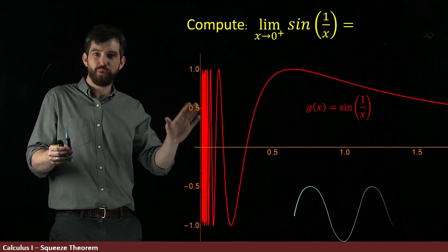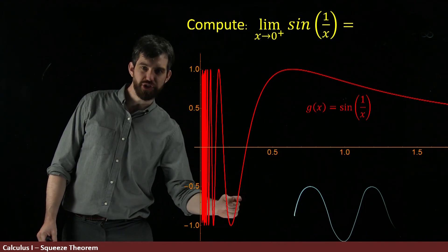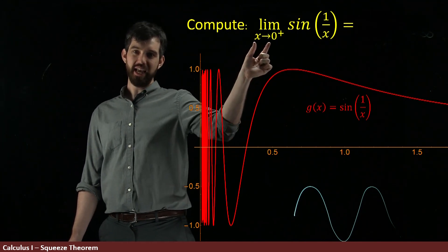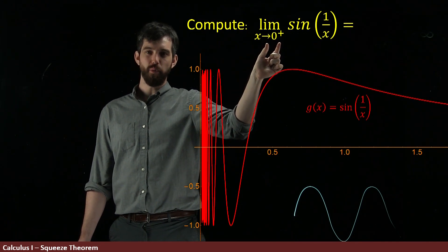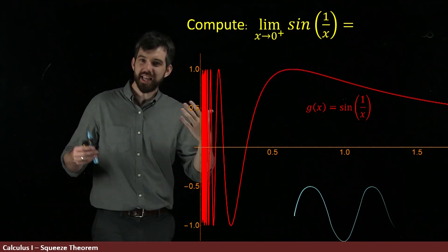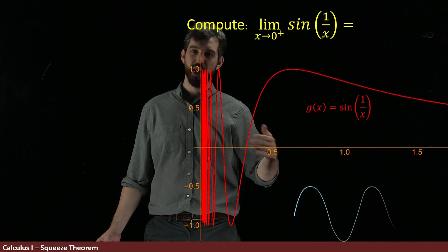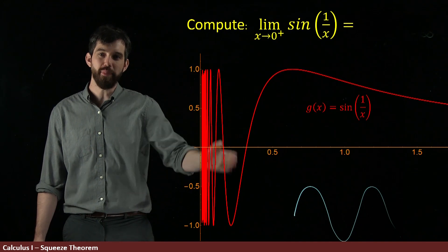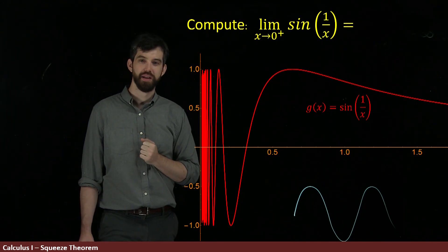This is the graph of sine of one over x — kind of bizarre. In this region where it starts oscillating really really quickly, that's because in a tiny interval around zero from the right, what you're inputting are bigger and bigger numbers: a million, a billion, a trillion. Sine of a million, sine of a billion, sine of a trillion — these oscillate between minus one and one really quickly. So we get the same oscillation between minus one and one, but it's compressed when you do sine of one over x.